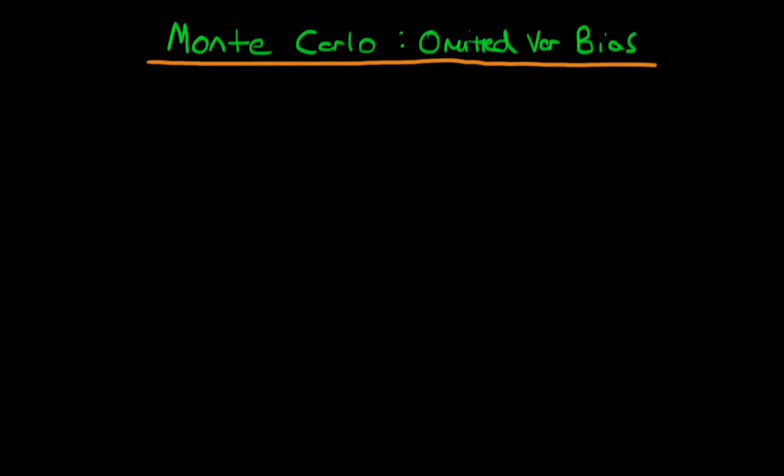In this video, I want to provide an example of how we can use Monte Carlo simulation in order to demonstrate that there is omitted variable bias.